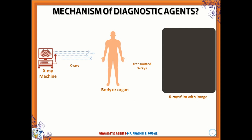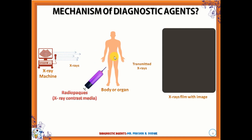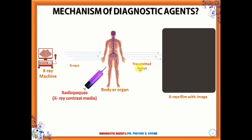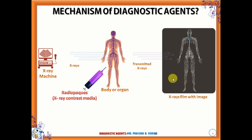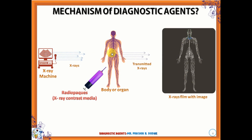Now let us see the animation of the same. The x-ray emits from the machine and goes to the body where the radio opaque substance has been injected. It is injected into the specific organ or part where we want to examine. The transmitted rays develop an image on the x-ray to show the structure of that specific organ or body part. The x-ray continuously bombards its rays on the body, and wherever the radiation is absorbed by the radio opaque substance, that part becomes visible on the x-ray film. This is how the diagnostic agent works.